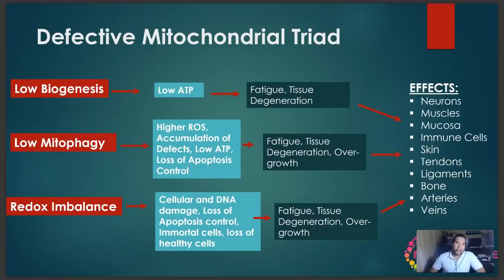Your skin, tendons, ligaments, bones, arteries, and veins — every part of your body is susceptible to mitochondrial dysfunction from these three major factors: low biogenesis, low mitophagy, and redox imbalance. Now that we understand the mitochondria, what dysfunction looks like, and all the types of diseases it can affect, it becomes important to start talking about solutions.